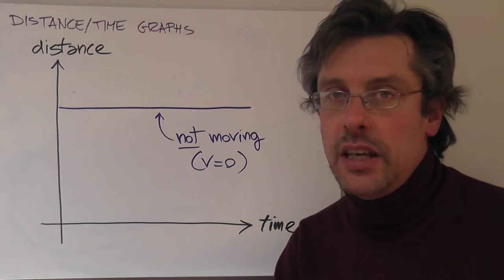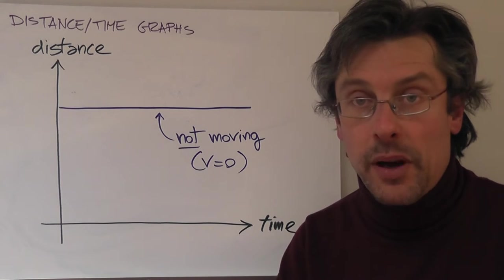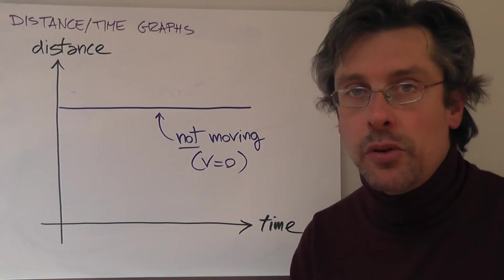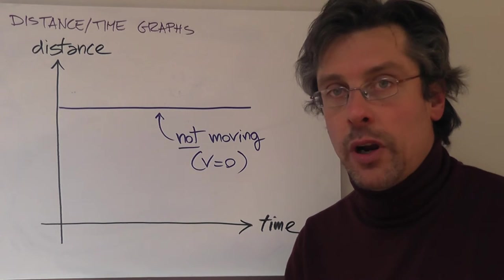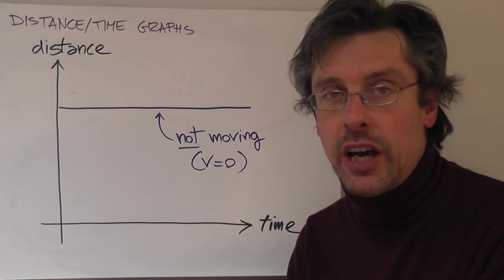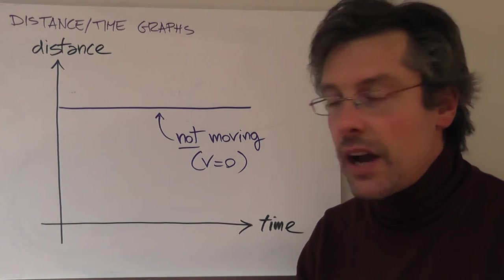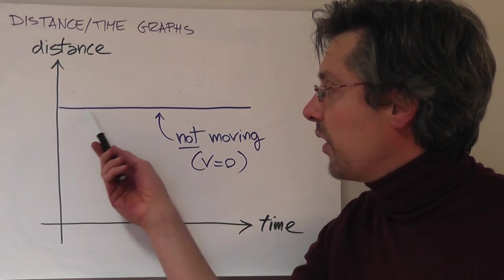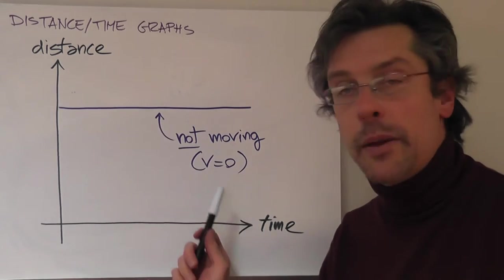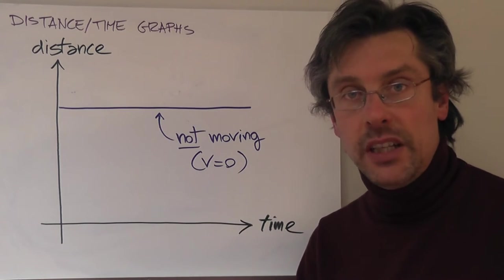Today we're going to see how we can represent different types of motion in a distance time graph. What happens if an object is not moving at all? When an object is not moving, it means that its distance — its position — is not changing over time. So if we represent it on a distance time graph, the graph will be a flat line like this one. A flat line in a distance time graph represents an object which is not moving, or, as we can say, has speed equal to zero.